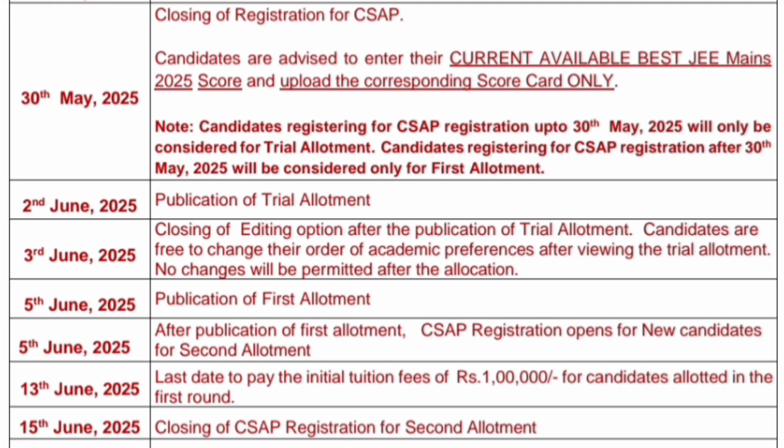On 5th June you will get the first round allotment result. Starting 5th June, new candidates can also register for the second round. 13th June is the last day to pay the initial tuition fees of 1 lakh rupees for candidates allotted a seat in round 1 — only then your seat is confirmed. 15th June 2025 is the closing of CSAP registration for the second round seat allotment; those who apply by then will only be eligible for round 2.